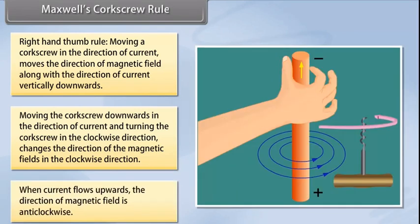So, when current flows upwards, the direction of magnetic field changes and is anti-clockwise.